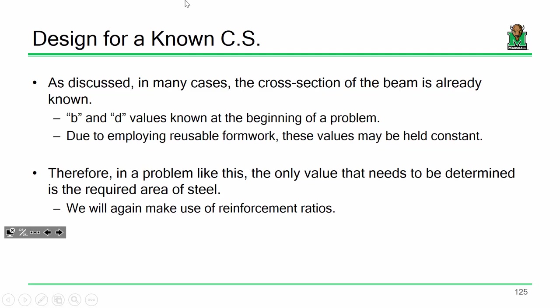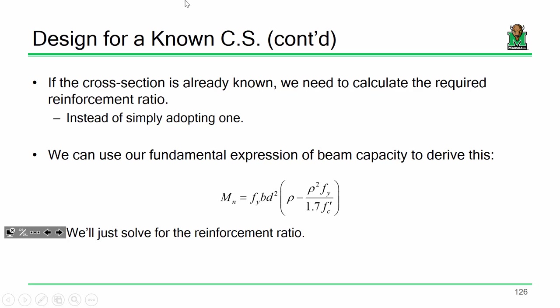We're not going to use the 0.18 fc-prime over fy — that was just a guess for when we had no clue what the beam looked like. It isn't necessary here because we can solve for it. So instead of guessing a value, we're going to derive one. If you recall when we were discussing the economy of reinforced concrete beams, we talked about how the more rebar you put in a beam, the stronger it is.